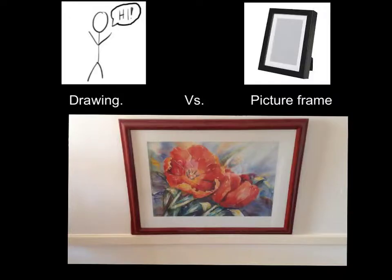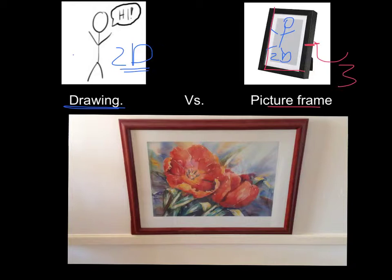One easy way to remember this would be any drawing would usually be an example of a 2D shape. A drawing would be a 2D shape because we draw in 2D, and this would be a 2D shape - you have a stickman. But if we put that drawing into a picture frame, then the drawing itself would be 2D, but the picture frame, because it has length and breadth and also thickness to the side, would be an example of something that's 3D. We have 2D being the drawings and 3D being the picture frame.